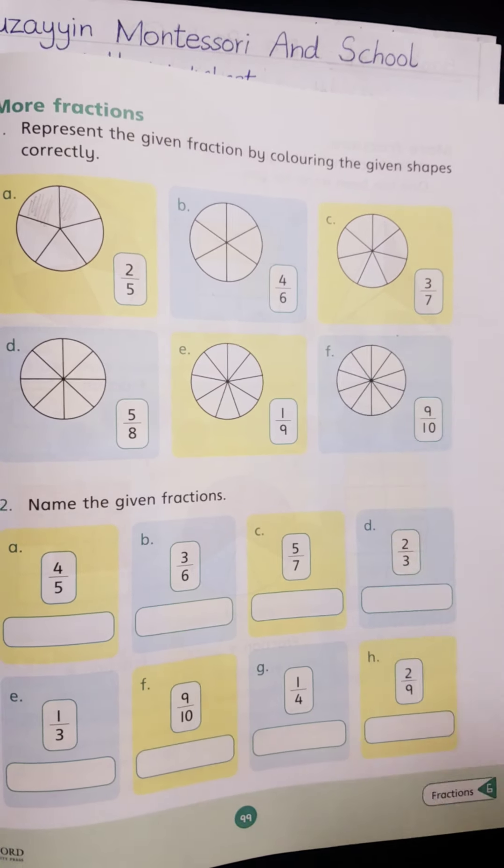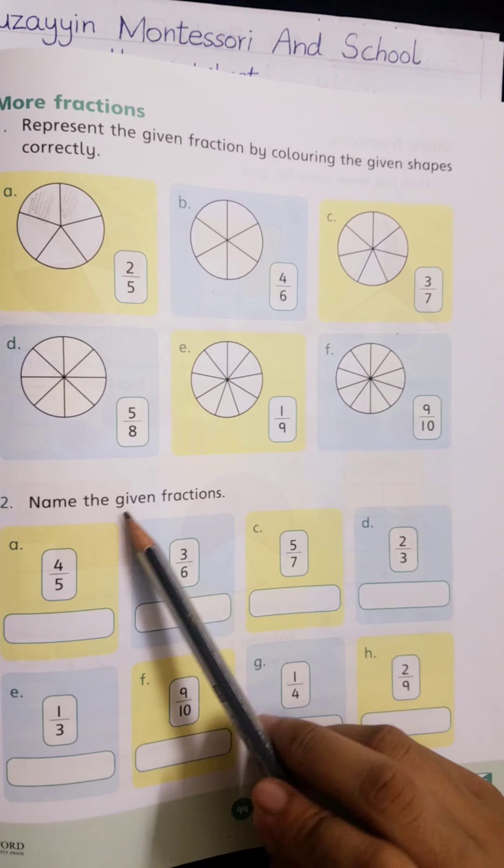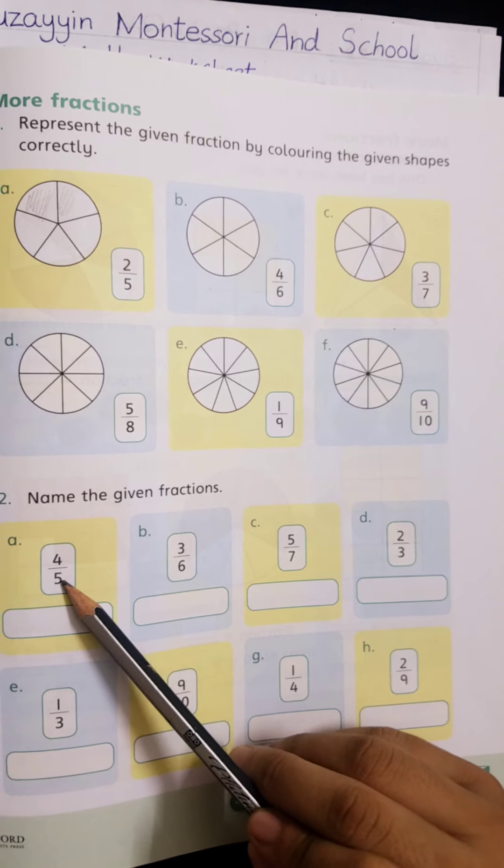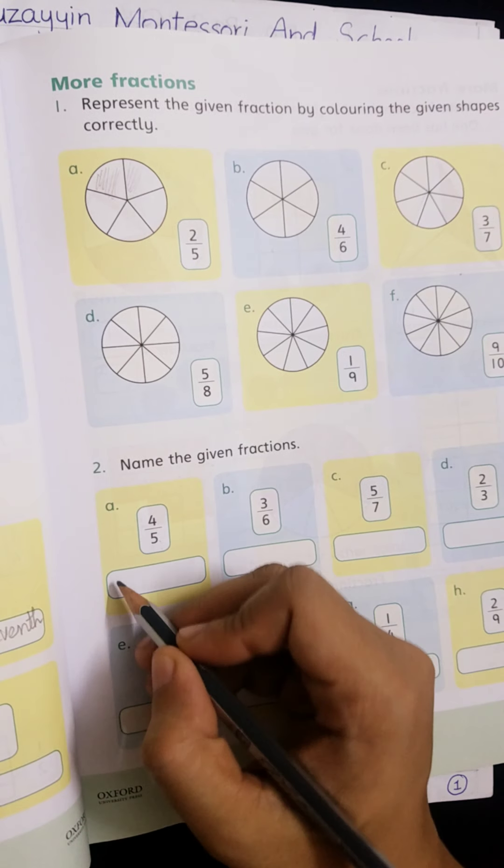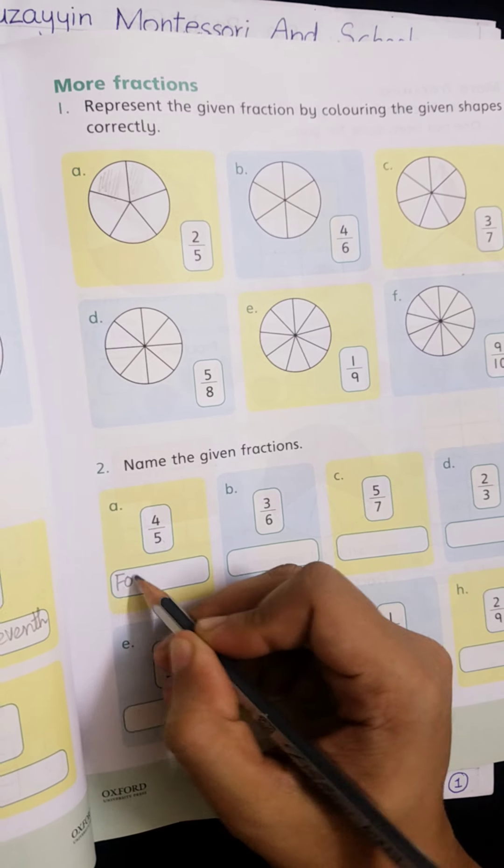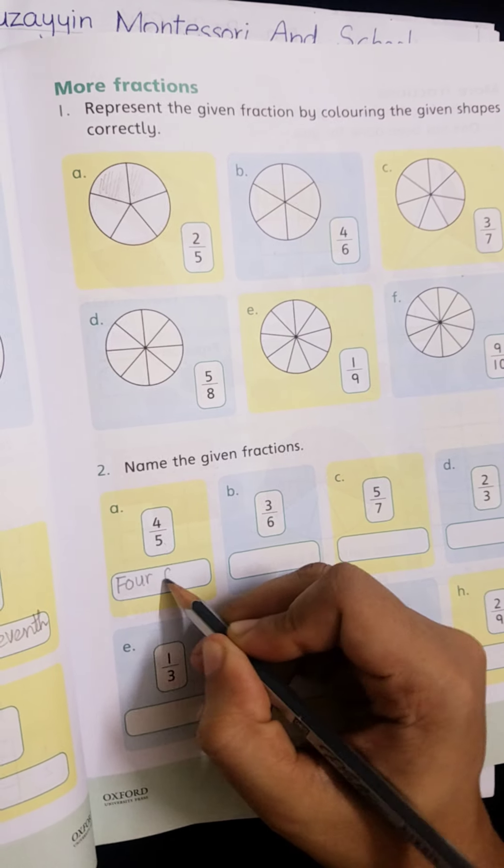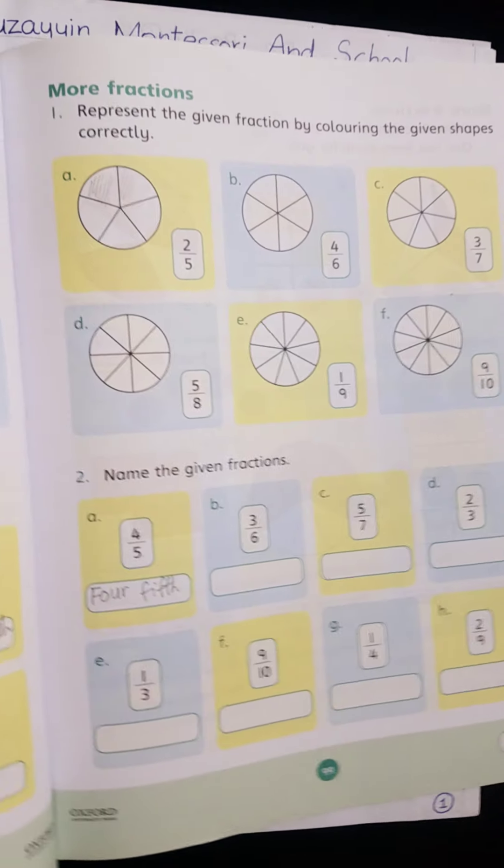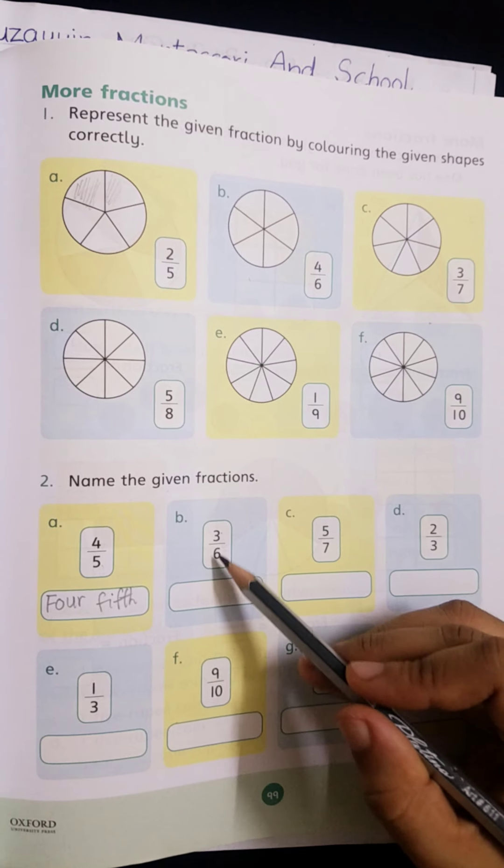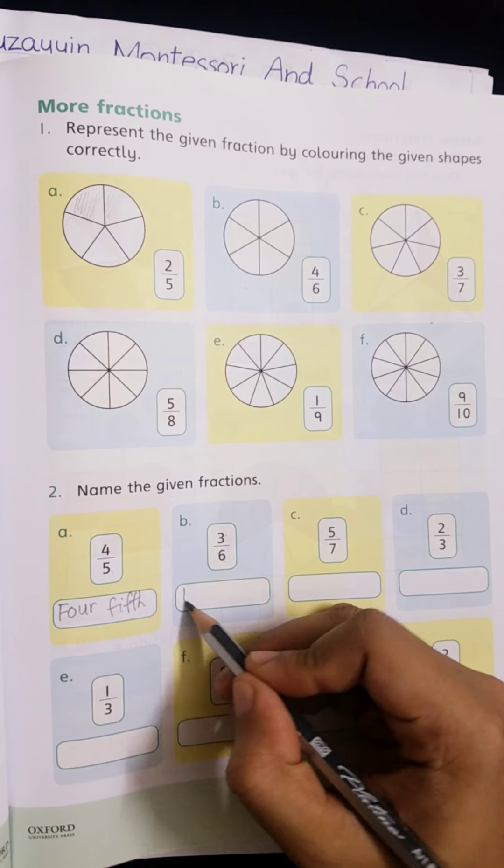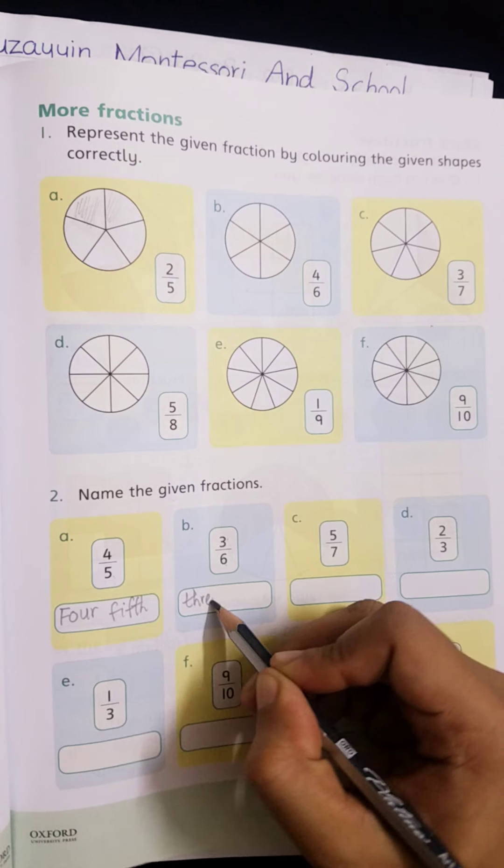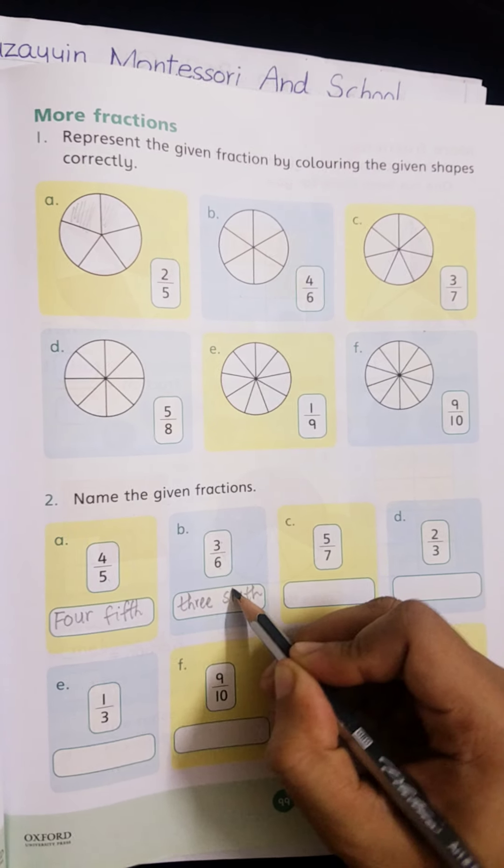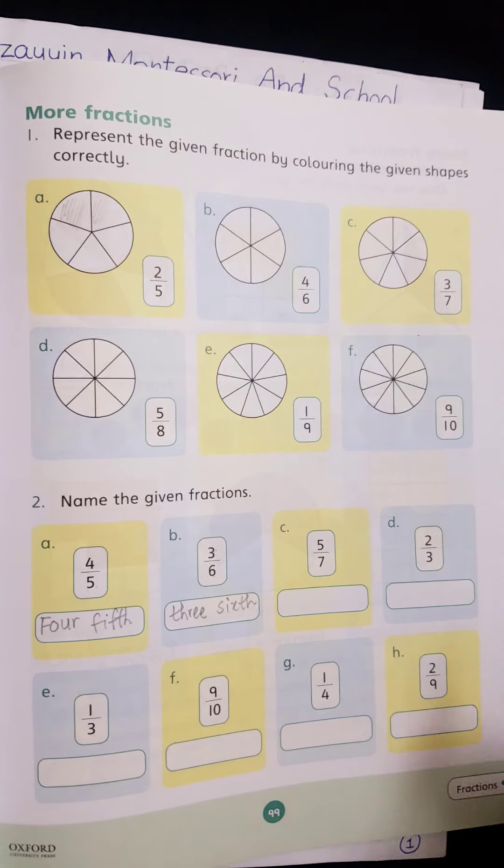Do this question in your book. Question number 2 is name the given fractions. 4 by 5, four-fifths. 3 by 6, three-sixths. Similarly, do all questions in your book.